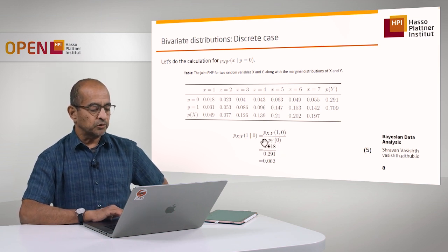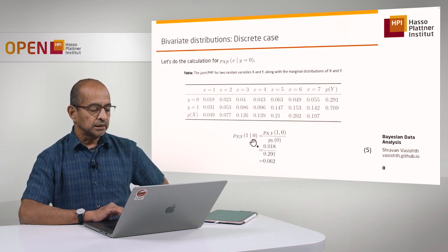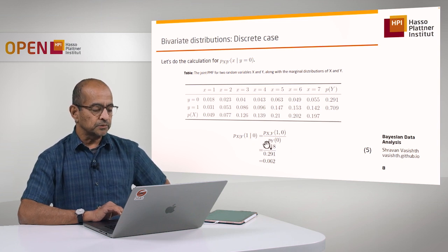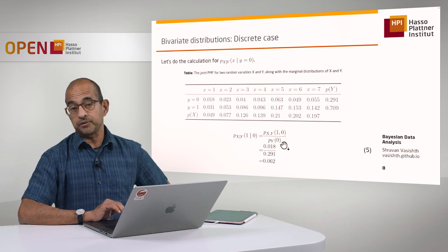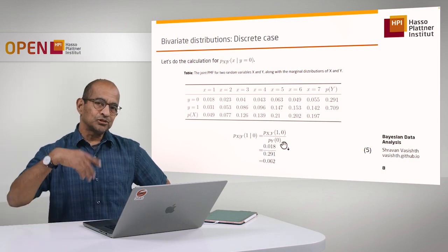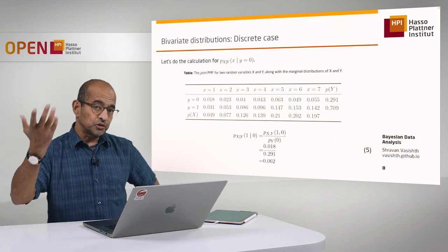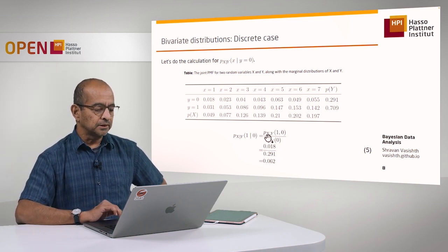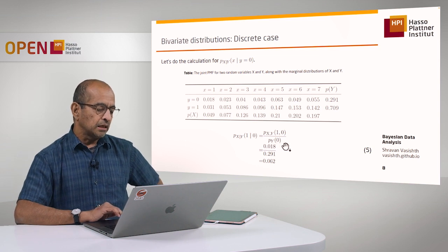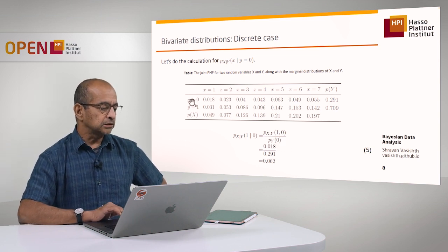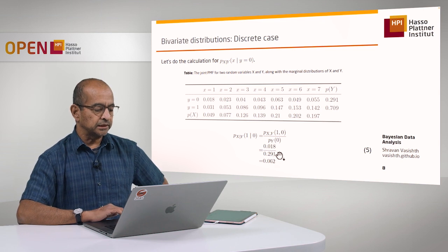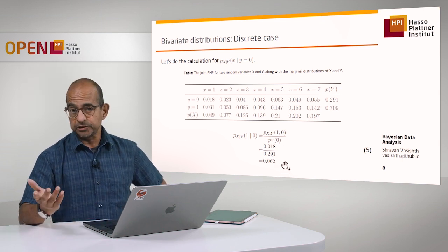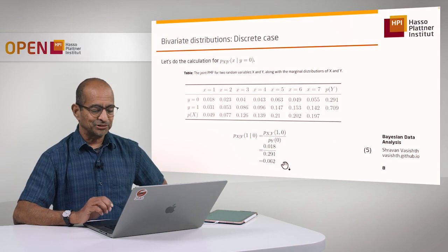In the denominator, I figure out the probability of y being equal to 0, because 0 is the conditional value I'm looking at. For this I look up the marginal distribution — the marginal probability of y equal to 0 is 0.291. If I compute this, I get 0.062. You can check that.